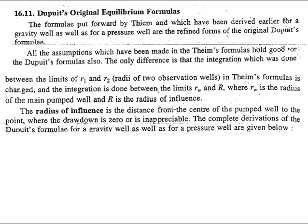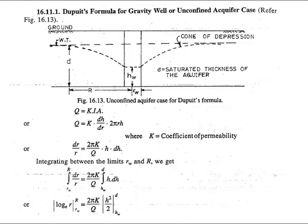So now next thing is what basically is the radius of influence. From this diagram you can see that this is the main pumped well that has been dug through this unconfined aquifer and this is the cone of depression. After this point the water level is almost horizontal, which means till this point the cone of depression or drawdown has its effect.